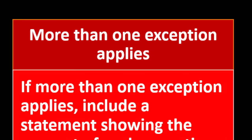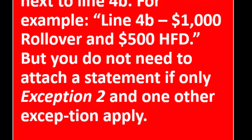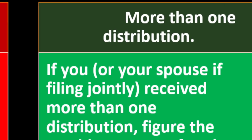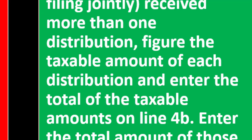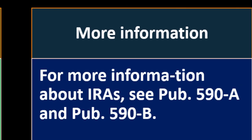Exception five: if more than one exception applies, include a statement showing the amount of each exception. Instead of making a single entry next to line 4B, for example: line 4B — $1,000 rollover and $500 HFD. You do not need to attach a statement if only exception two and one other exception apply. If you or your spouse received more than one distribution, figure the taxable amount of each and enter the total of the taxable amounts on line 4B, and the total of all distributions on line 4A. For more complex scenarios, see Publication 590-A and Publication 590-B on irs.gov.